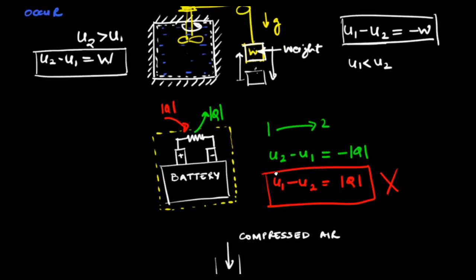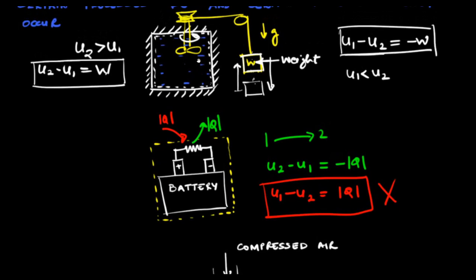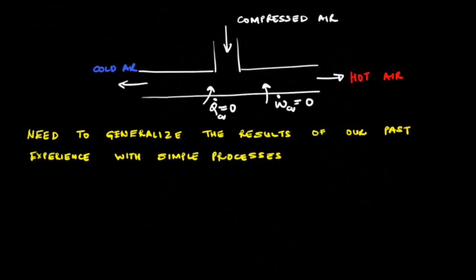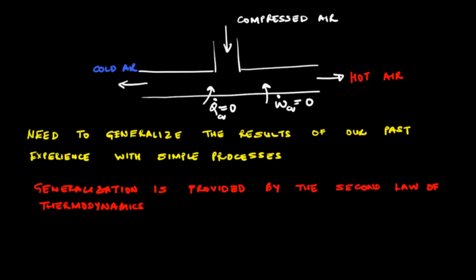To answer such questions, one needs to generalize the results of past experiences with simple processes. We know in which direction simple processes like the ones seen previously will proceed. Using such simple processes, can we generalize the results so we can apply them to different kinds of systems? This kind of generalization is provided by the second law of thermodynamics, which predicts the direction of different types of processes using a common principle.